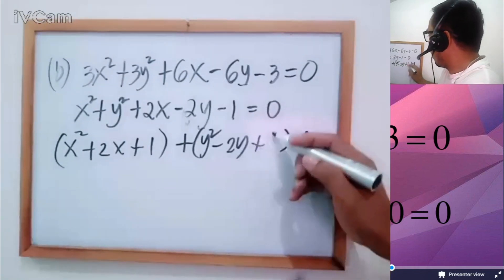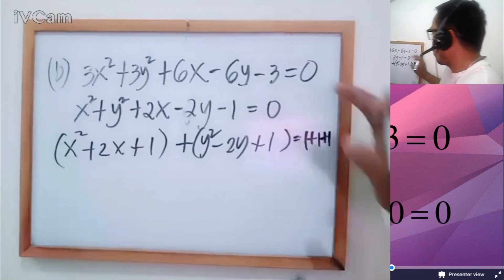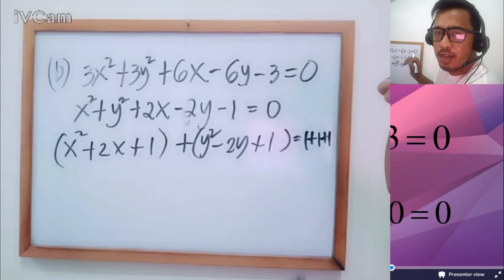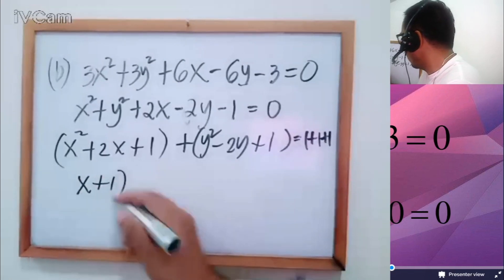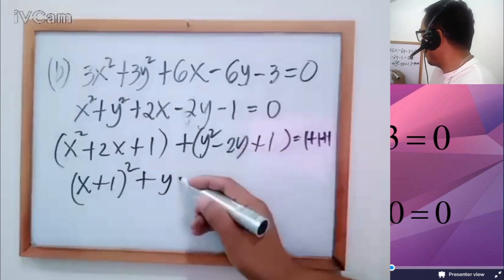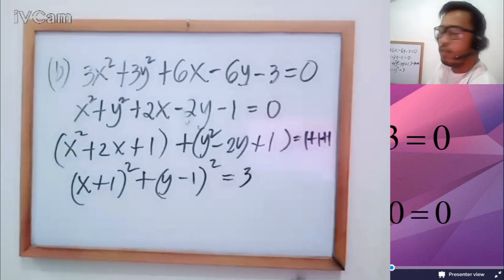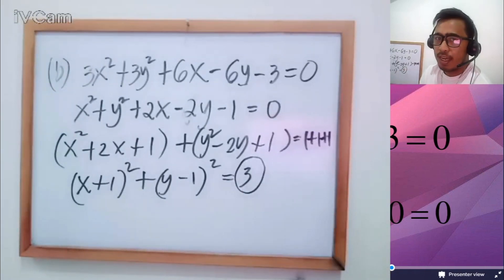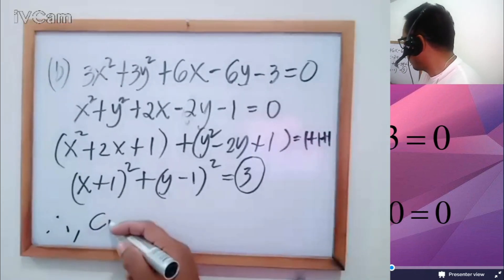Completing the square: for X, 2 divided by 2 is 1, squared is 1, so add 1. For Y, −2 divided by 2 is −1, squared is 1, so add 1. This gives (X + 1)² + (Y − 1)² = 3. Our Q is 3, which is greater than 0, so the graph is a circle.